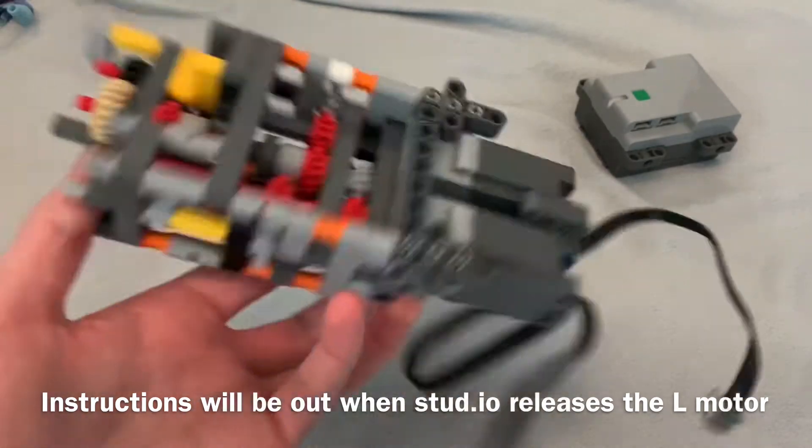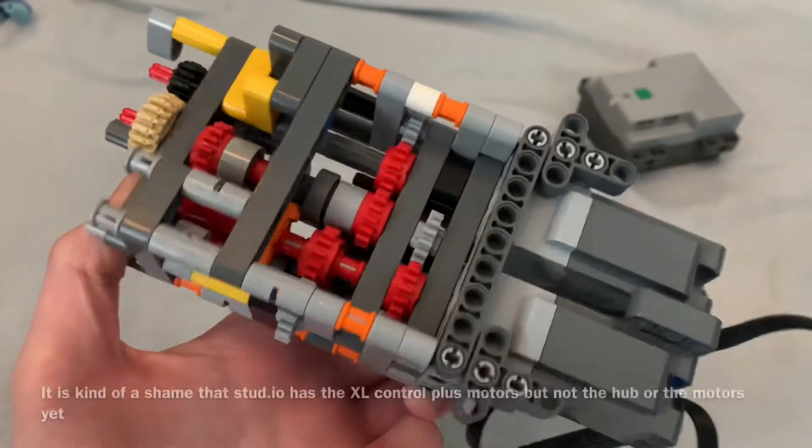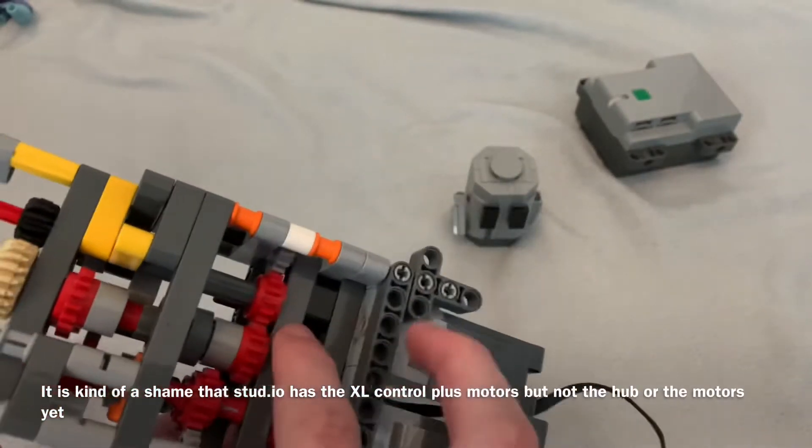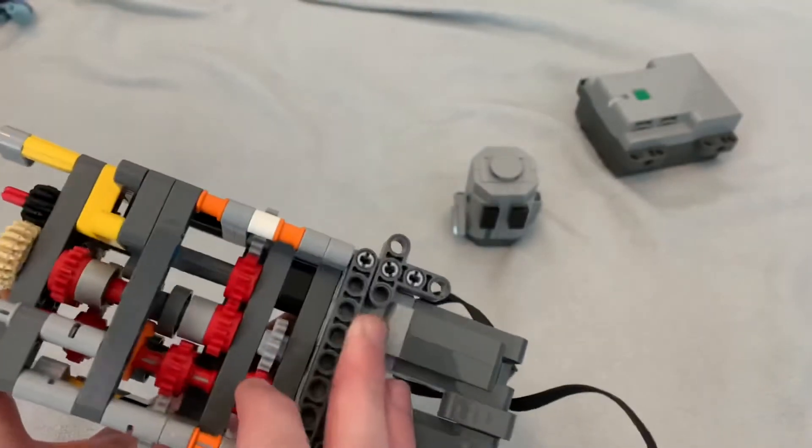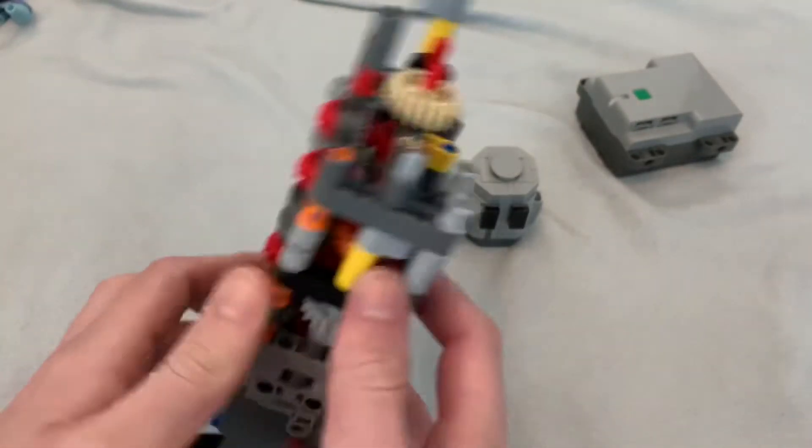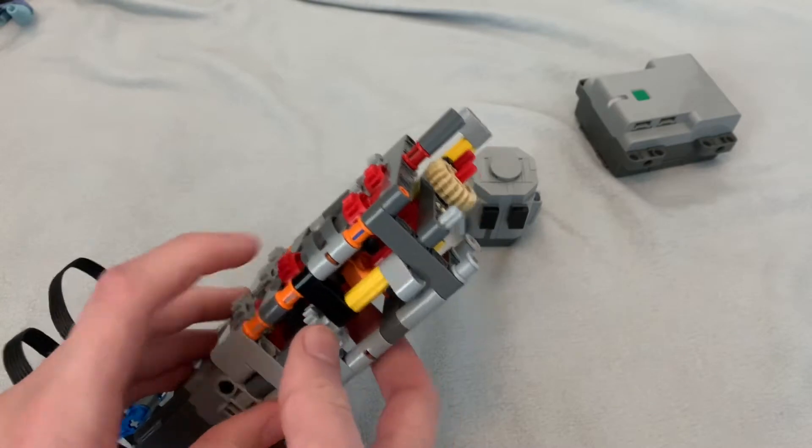This gearbox allows me to activate four different ends. This end right here controls this one right here, and then this gear right here that engages from here controls this one.